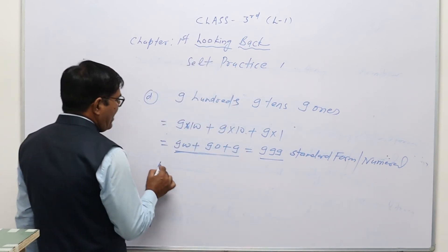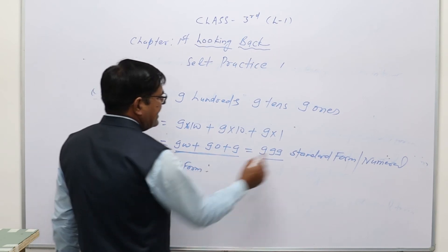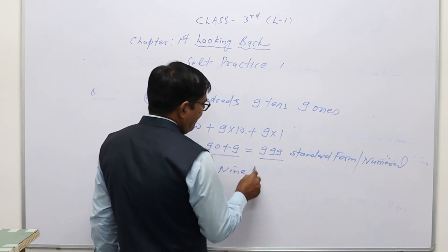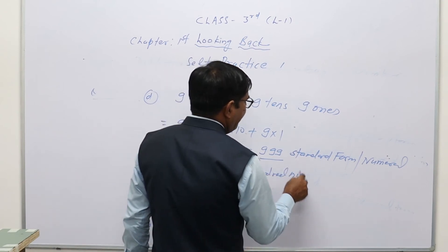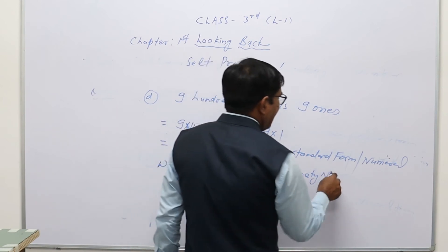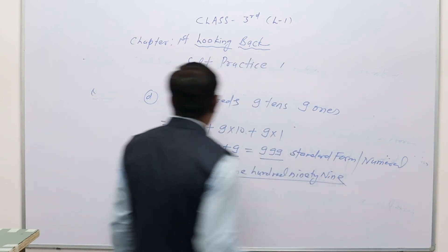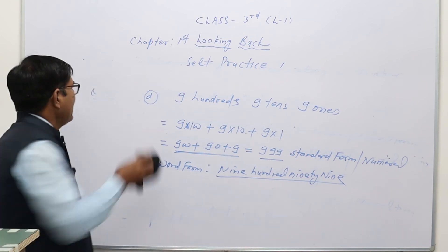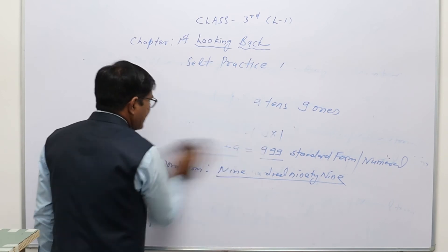Now we have to write 999 in word form: nine hundred ninety-nine. This was question number one. Now let us discuss question number two.